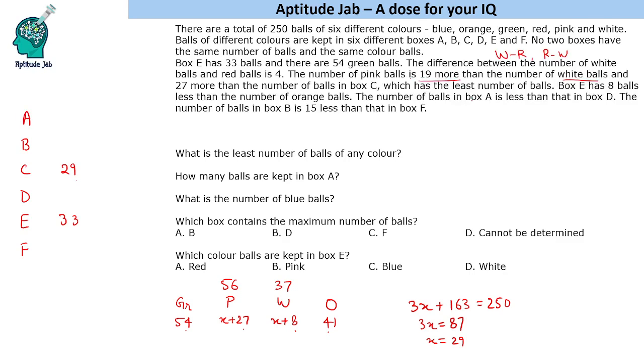It says number of balls in box A is less than in box D. Number of balls in box B is 15 less than that in box F. So now let us find the difference of 15. We get 56 and 41 with a difference of 15. So B is 15 less than F, so F will be 56 and B will be 41. This is orange ball and 56 is pink balls.